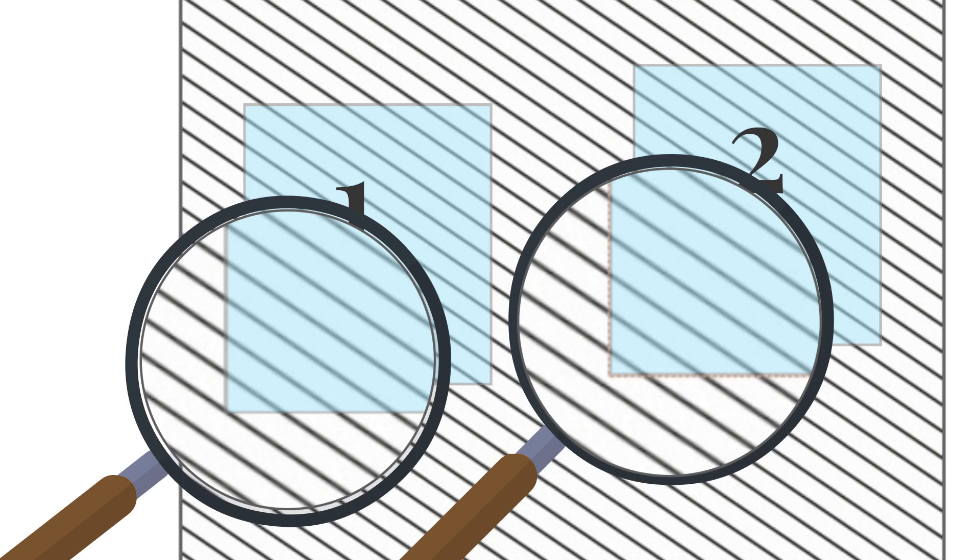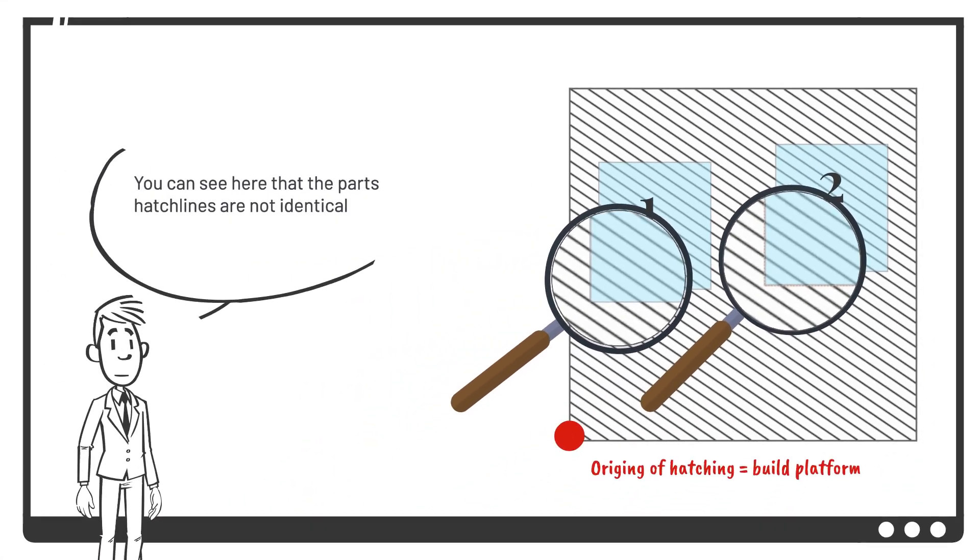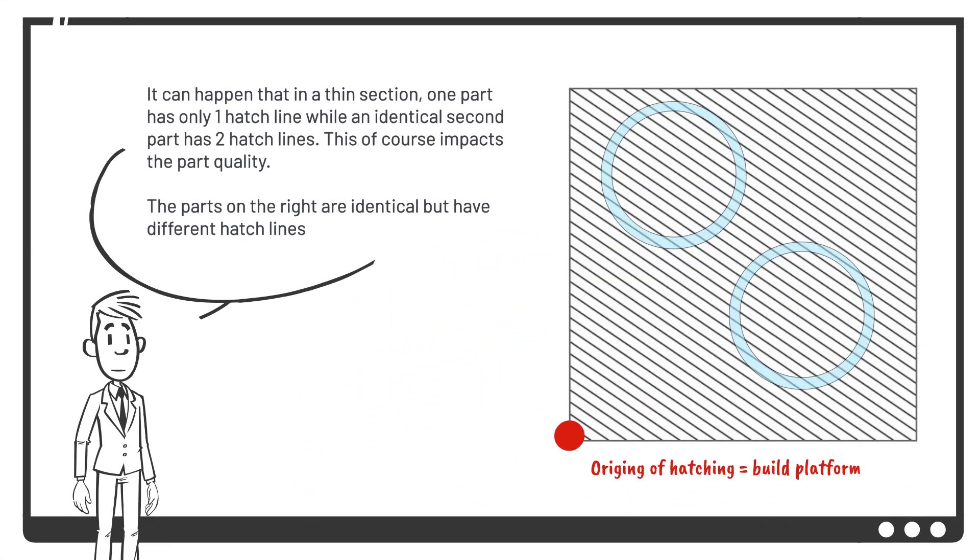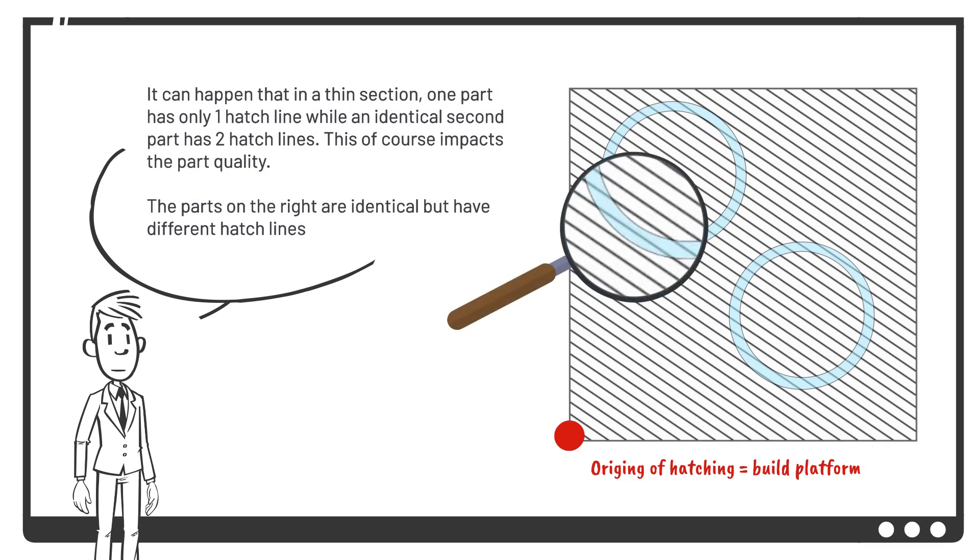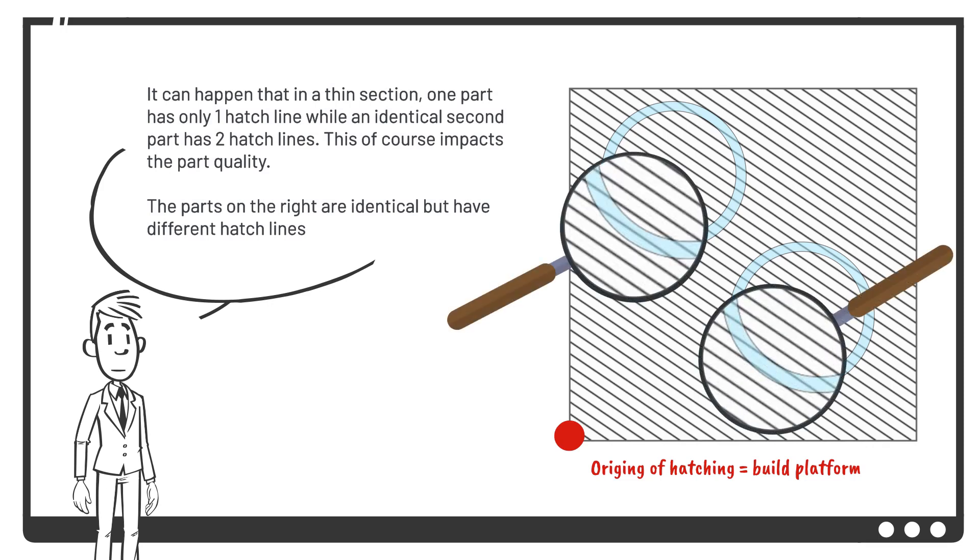You can see here that the parts hatch lines are not identical. It can happen that in a thin section, one part has only one hatch line while an identical second part has two hatch lines. This of course impacts the part quality. The parts on the right are identical but have different hatch lines.